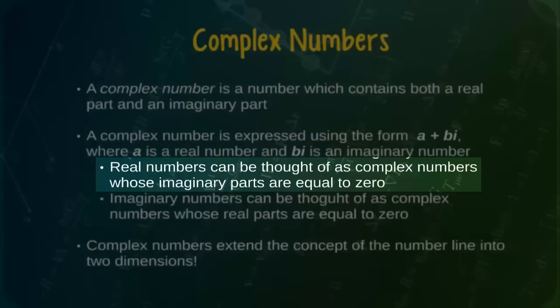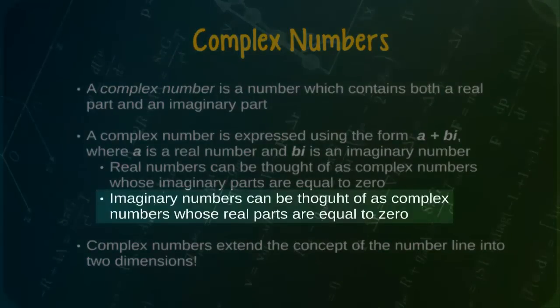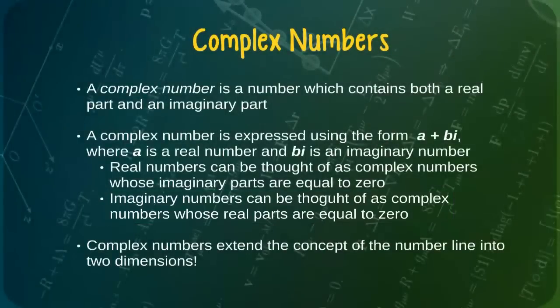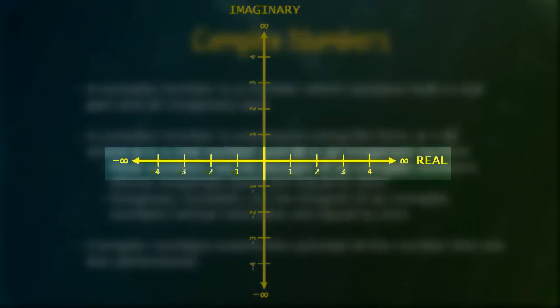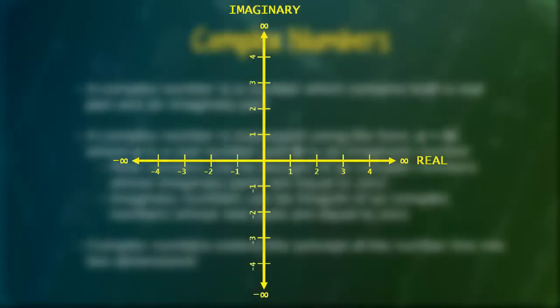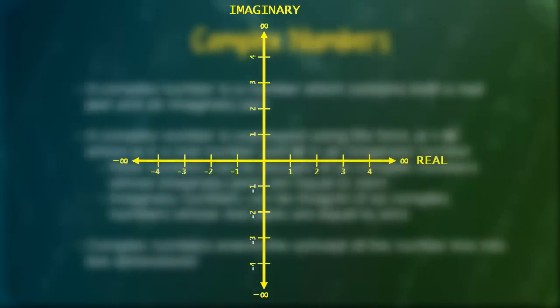In this conceptualization, a real number is simply a complex number whose imaginary part is equal to 0, while an imaginary number is simply a complex number whose real part is equal to 0. Complex numbers can be understood geometrically as a point on a complex plane, where the horizontal axis is the real number line and the vertical axis is the imaginary number line. Using this framework, any complex number can be easily visualized simply as a location within the geometric space.